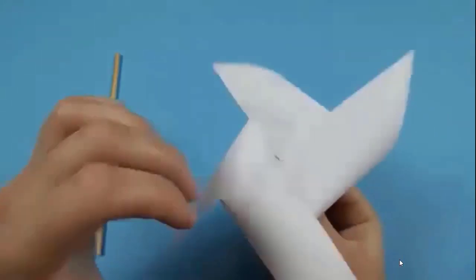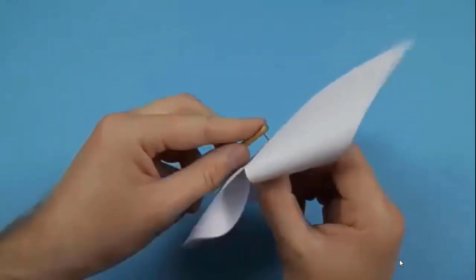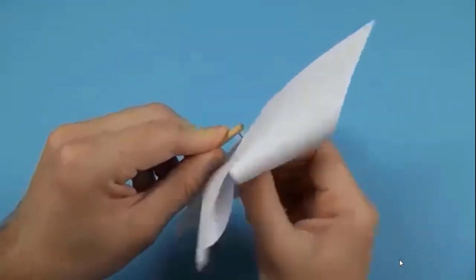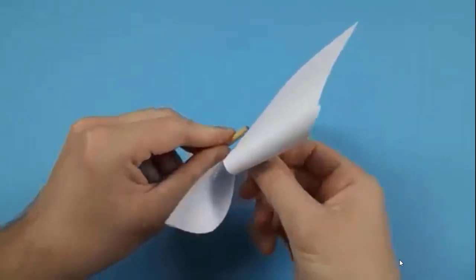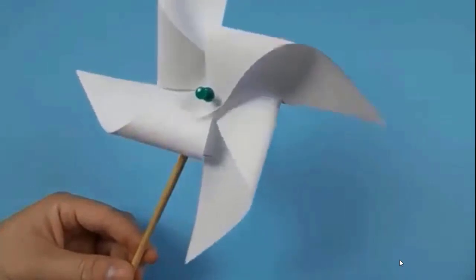On the opposite side, take straw and attach with the thumb pin. You can use any type of straw. And here paper windmill is ready.